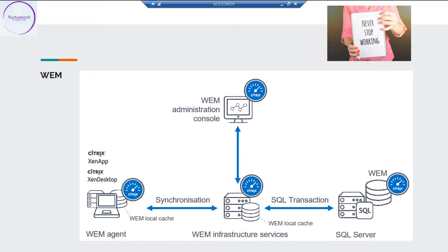All these components are mandatory. When you install WEM on-premise, you use your Active Directory and must install the infrastructure services server. You'll need SQL Server, and then you add physical and virtual machines with the WEM agent. Installing the agent on a physical computer enables a fantastic transformation — you can take an old physical computer and turn it into something like a thin client. Normally you install it on your VMs, your VDAs.